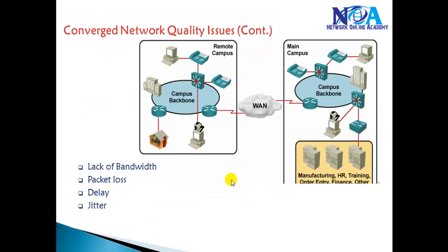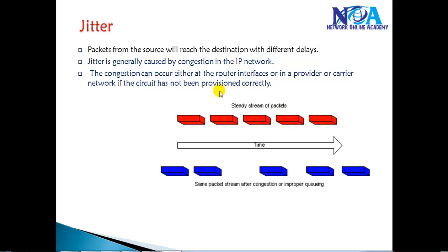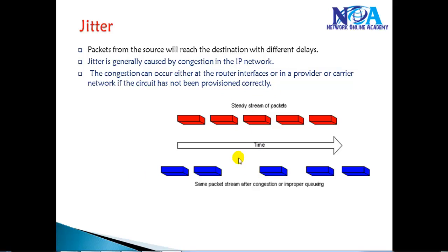The fourth problem is jitter. Jitter is when packets from the source reach the destination with varying delays. Normally, if you send packets in a steady stream, each packet has a consistent serial delay. But with jitter, there is extra uneven delay between packets. Jitter is generally caused by congestion on the network — on router interfaces, or in the provider or carrier network.